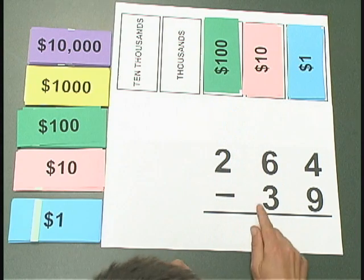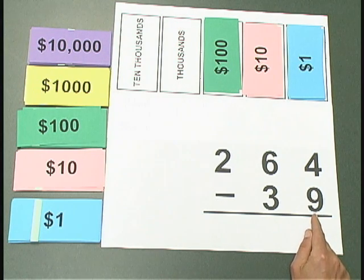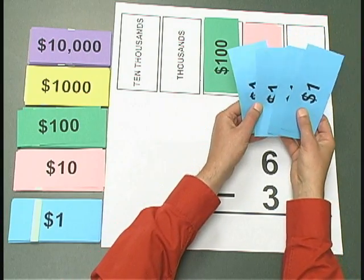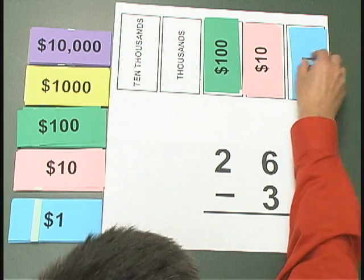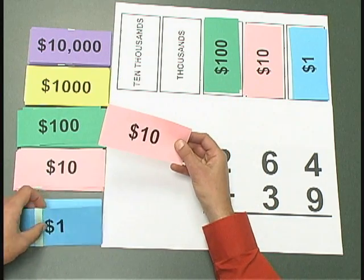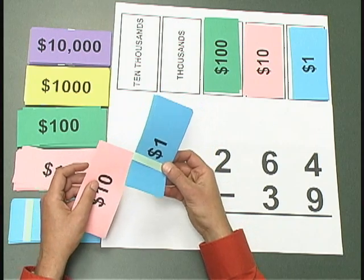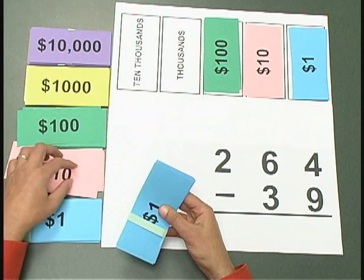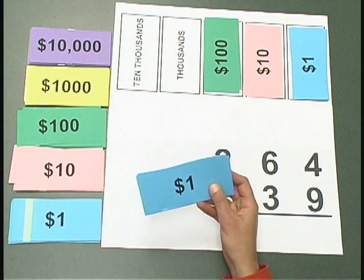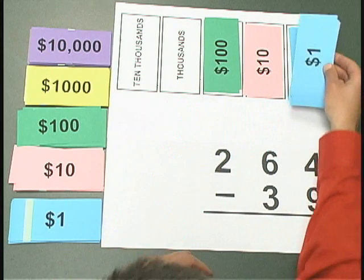I'd like to take away $39 from that $264. When we subtract by hand, we start with the ones place. We'd like to take $9 away from our four, but I can't take $9 away from these four. So what I'm going to do is take one of my $10 bills and exchange it for a packet of 10 ones. Sometimes this process is called borrowing, but I think a better word would be exchange — we're making an even exchange of 10 ones for the one 10.